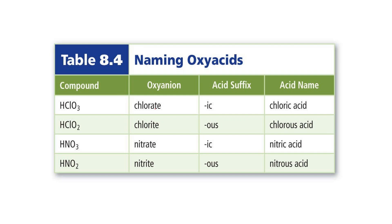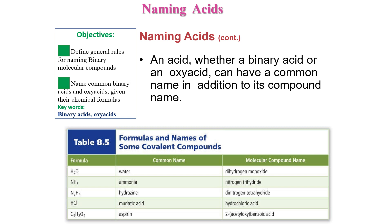These examples show how we give names to oxy acids: ClO3− is chlorate, so ATE changes to IC → 'chloric acid.' ClO2− is chlorite, so ITE changes to OUS → 'chlorous acid.' And so on. These are some common names of covalent compounds — for example H2O is technically 'dihydrogen monoxide,' and NH3 is technically 'nitrogen trihydride,' but we know them as water and ammonia. Some compounds have common names different from the systematic ones.